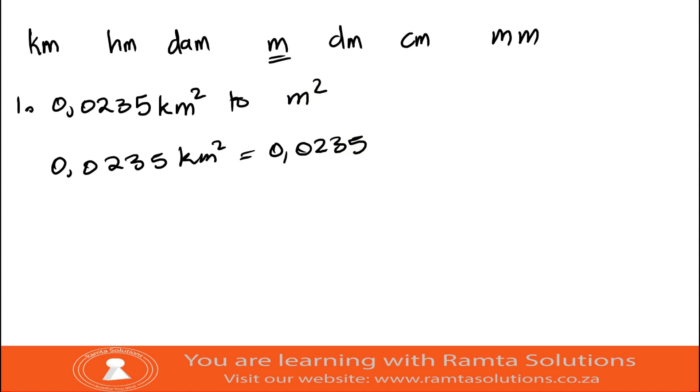So if there was no square, what we're going to say is we were going to say this is from kilometer to meter. Let's see, this is one, two, three, so we will multiply with a thousand.